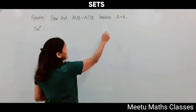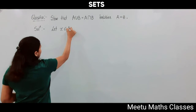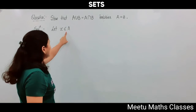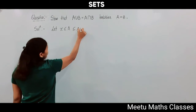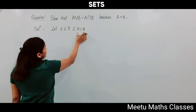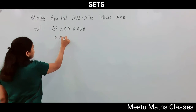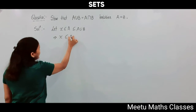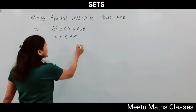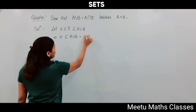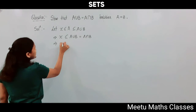To show that A is a subset of B, let us take an arbitrary element in A. Let X belong to A. Since A is a subset of A union B, that implies X belongs to A union B. Now we are given that A union B equals A intersection B, so that implies X belongs to A intersection B.